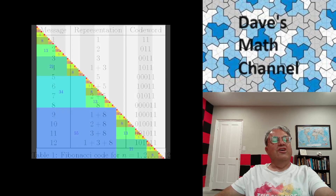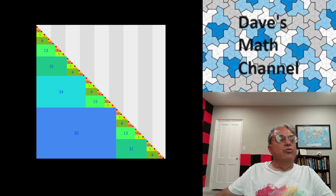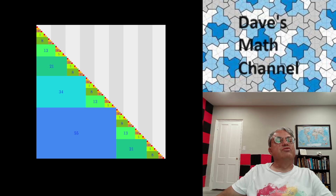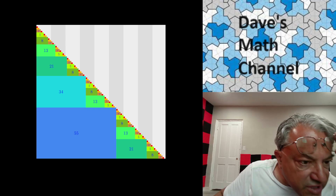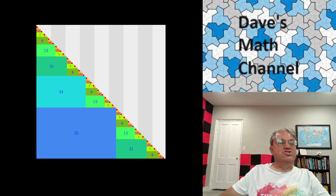You can represent this graphically — this is a nice graph I showed on the introductory slide. They're going up to 89 and color-coding the representations. The blocks on the left correspond to Fibonacci leading terms. The last block shown is 55, so those rows represent integers from 55 to 88.